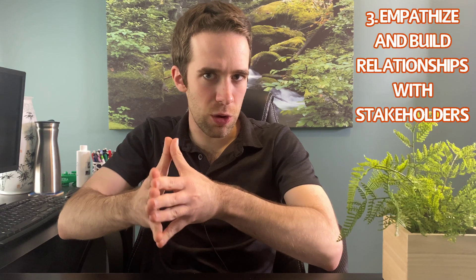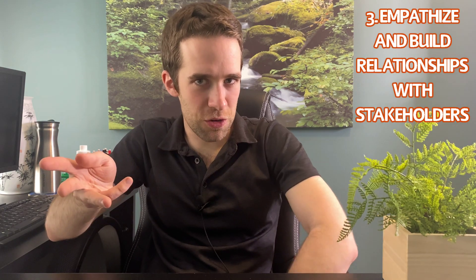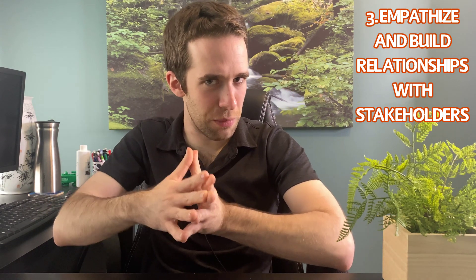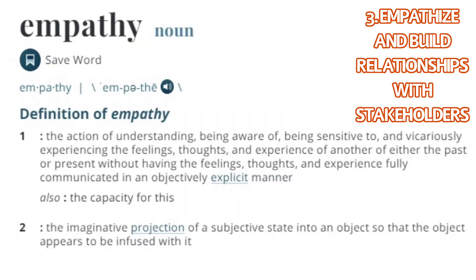Item number three is to empathize and build good relationships with your stakeholders. It's important to understand the meaning of the word empathy. According to Merriam-Webster, empathy is defined as the action of understanding, being aware of, being sensitive to, and vicariously experiencing the feelings, thoughts, and experience of another — of either the past or present — without having the feelings, thoughts, and experience fully communicated in an objectively explicit manner.